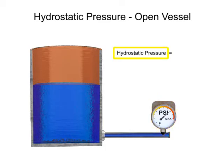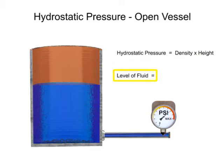To calculate hydrostatic pressure, the density of the material is multiplied by the height of the column. The level of fluid in a column can be determined by dividing the pressure value by the density of the material.